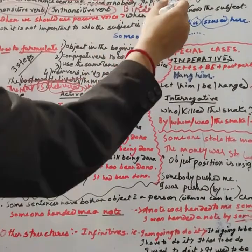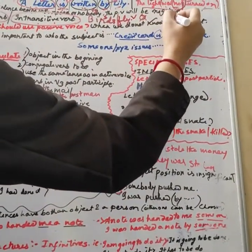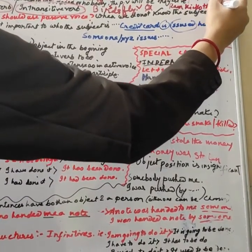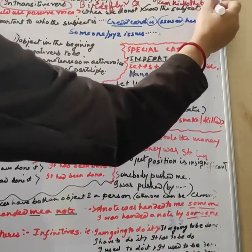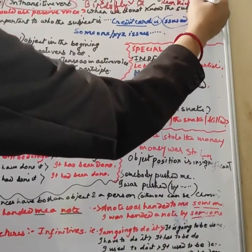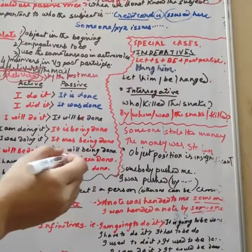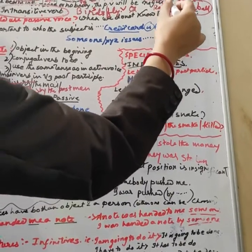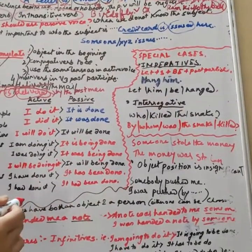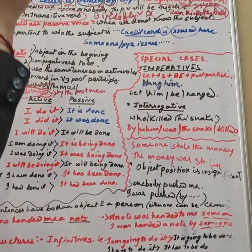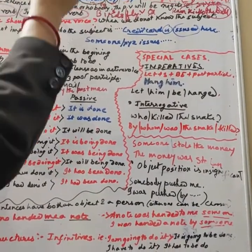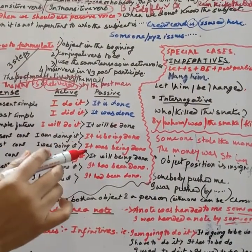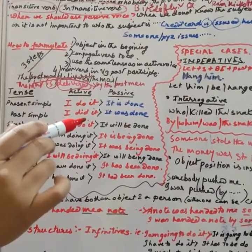Now if I say 'Ram kicks the ball' — Ram kicks what? The ball. So the structure is subject plus verb plus object. This is a transitive verb; the sense moves from Ram to ball. For active-to-passive conversion, the sentence must have a transitive verb.